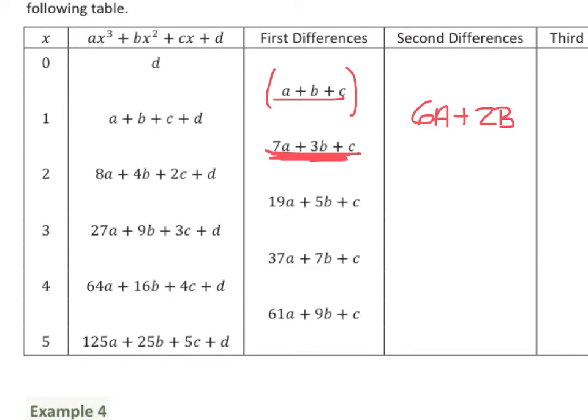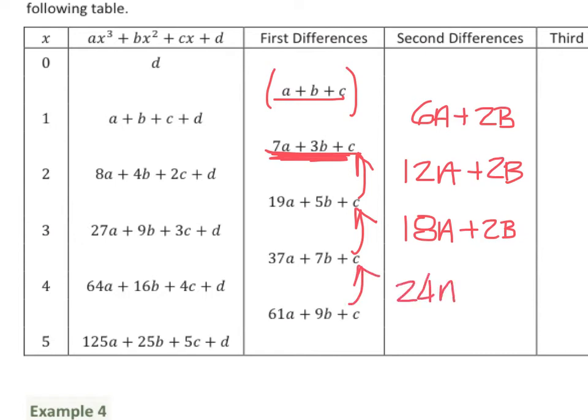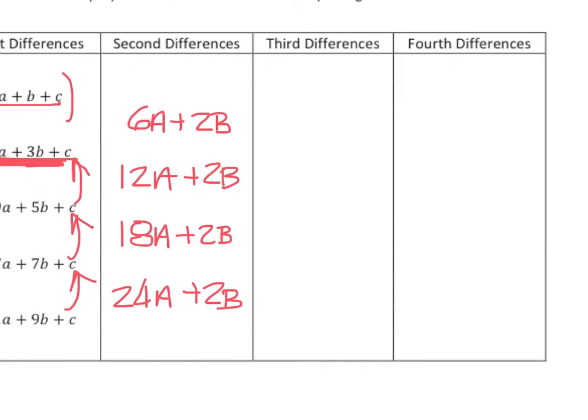And 12A plus 2B. All right. That's for these two. And what would this be? 18A, yeah. 18A plus 2B. And what about this one? 24A plus 2B. That's right. Now if you have any questions about how we came up with those second differences, we can do one off to the right if you want to. We would just have a 6A left. Okay. 6A, what about here? 6A. Looks like it's going to be 6A all the way through. And what would the fourth differences be? Zero. Yeah. So we have zero.